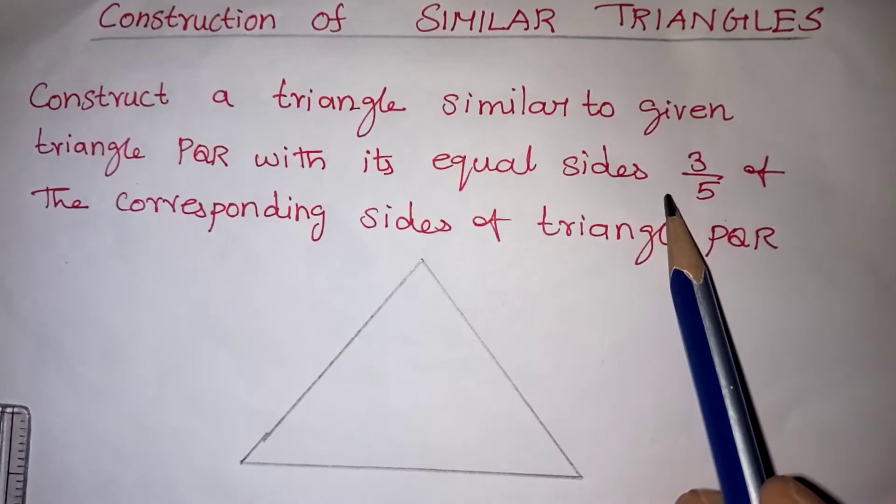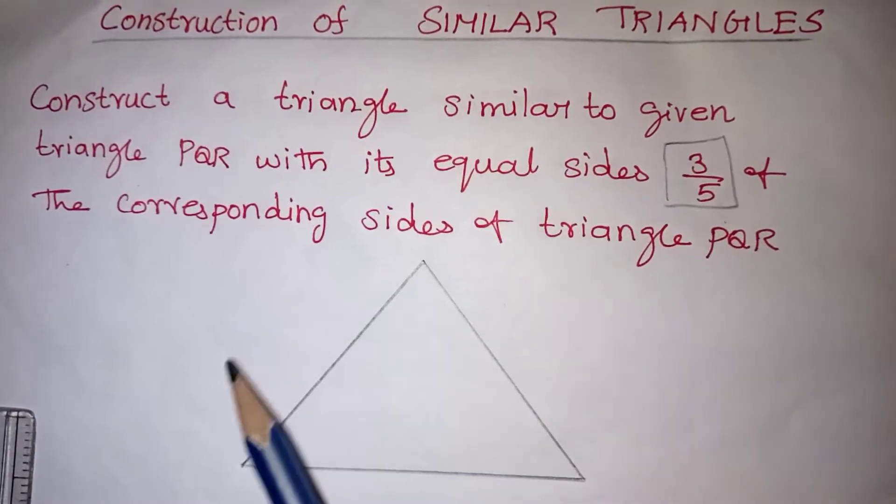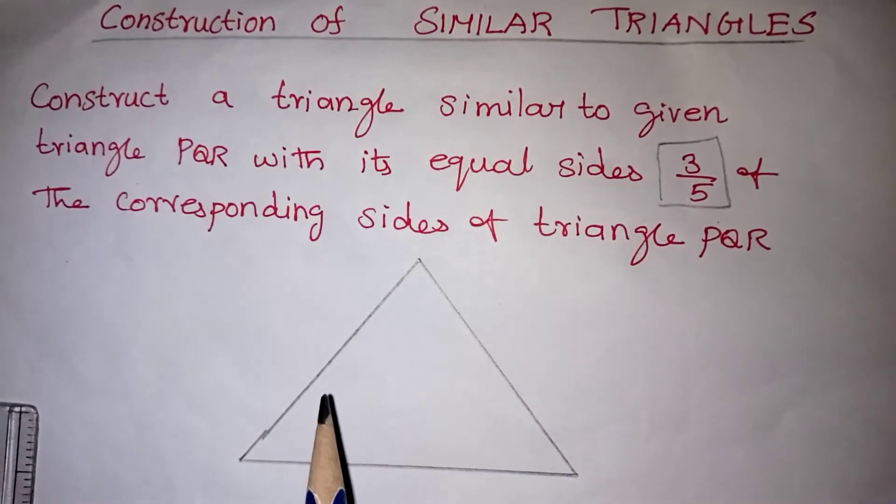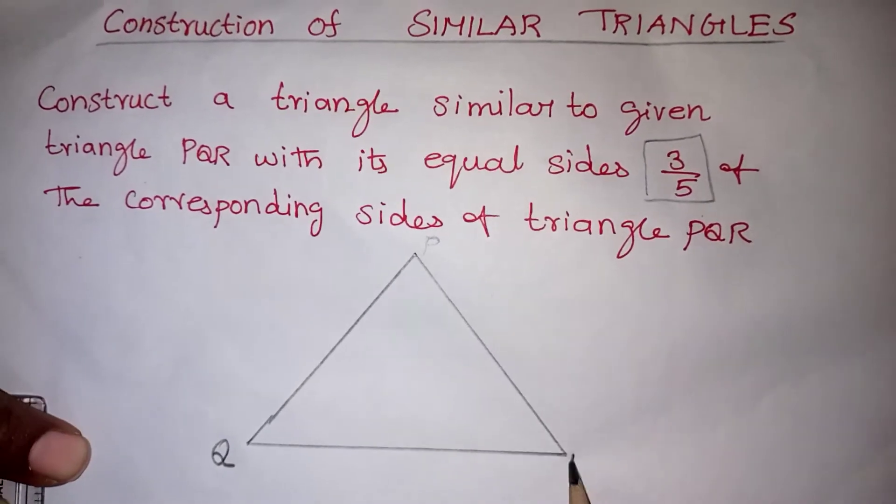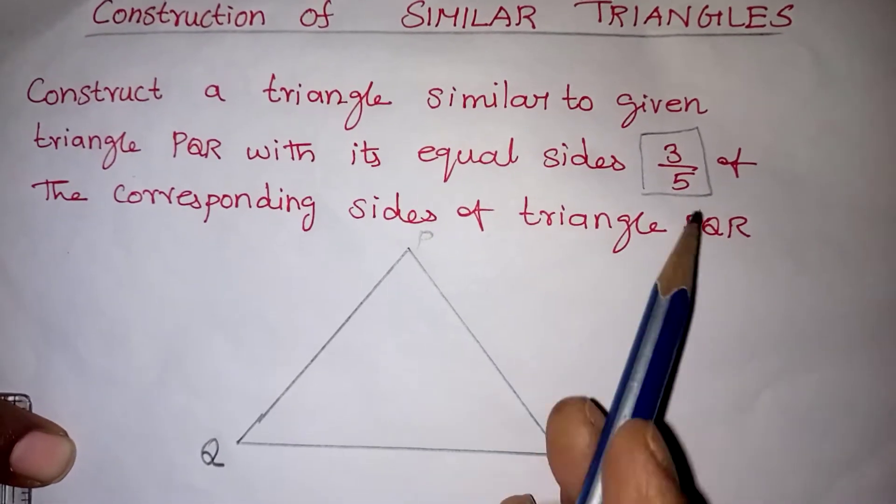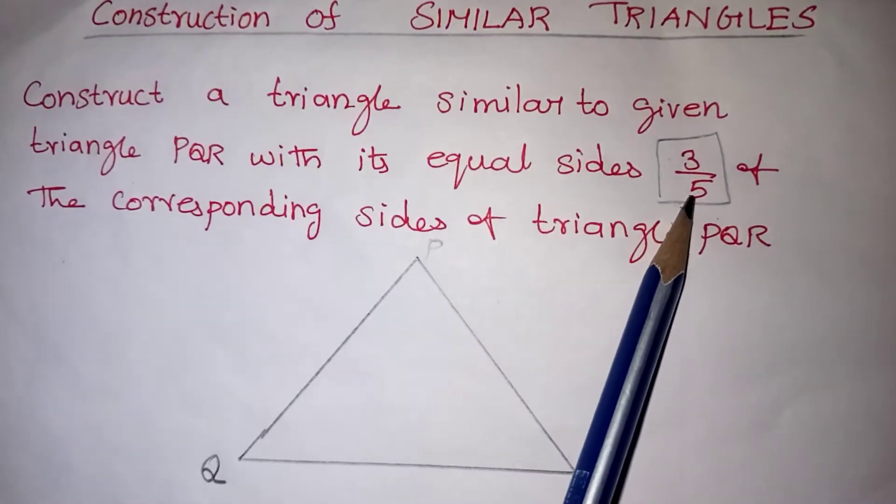Now, we need to form a similar triangle that should be 3/5 of the given triangle. So here I am going to take this as P, this is Q, and this is R. First, verify what is the bigger number in these two. Five is your bigger number.